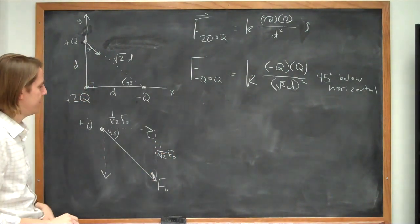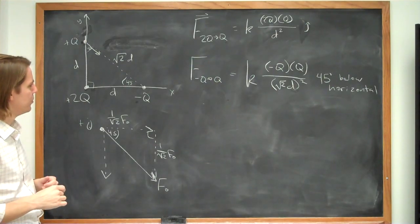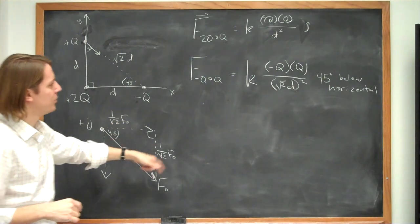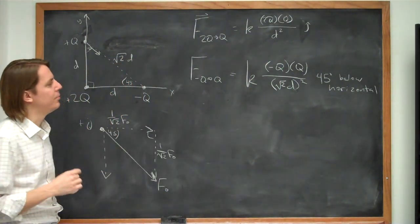Again, using a Pythagorean theorem, or if you want, you can use trig. Whatever you want to use. Basically, we know each of these components is 1 over the square root of 2 times the full magnitude.